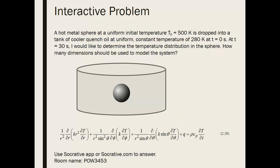Assuming the sphere has convection happening uniformly at its surface, there is no angular dependence on temperature, so we can neglect variations with respect to φ and θ. There is no generation, but we are interested in temperature changes over time — going from 500 K exposed to 280 K and observing at only 30 seconds. So we include the time derivative and consider temperature variation with respect to the sphere's radius r only.